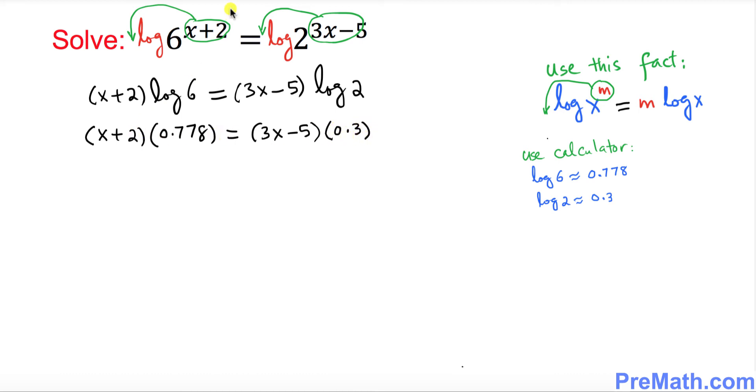So far so good. Now we're going to be distributing. Go ahead and distribute these values. So we get 0.778x plus 2 times this is 1.556 equals 0.9x minus 1.5.